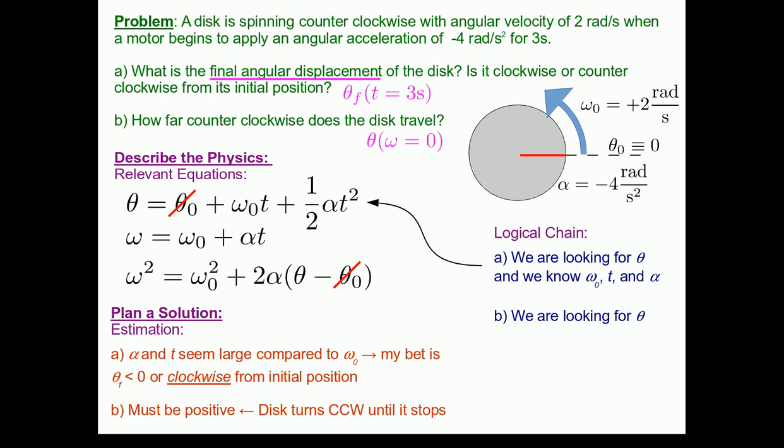For part B, we're also looking for a theta. And we still know omega-naught and alpha. But this time, we know the final omega is equal to zero because, as discussed in our approximations and constraints, at its furthest counterclockwise angle, the thing will come to a stop instantaneously before beginning to rotate back.